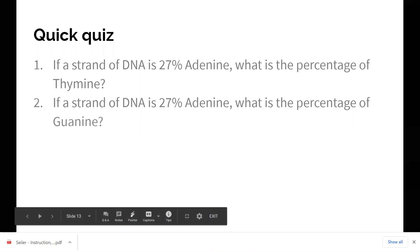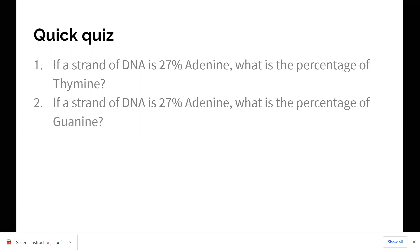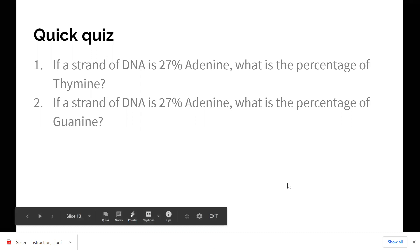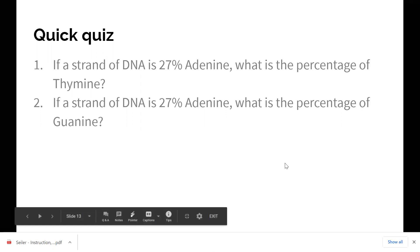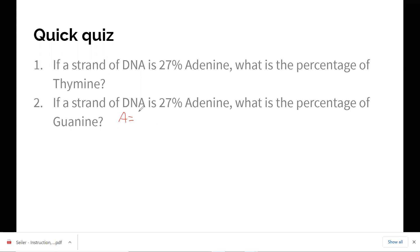Question two. If a strand of DNA is 27% Adenine, what is the percentage of guanine? Now you might be thinking to yourself, Ms. Seiler, I can't figure that out because I only know that A equals T. Okay, cool. So let's think about it for a second. A equals T, which means that if the sample is 27% Adenine, it's also going to be 27% thymine.